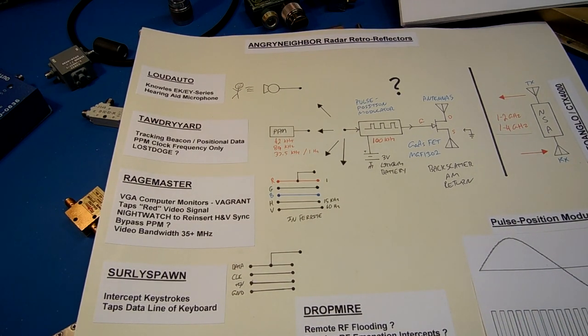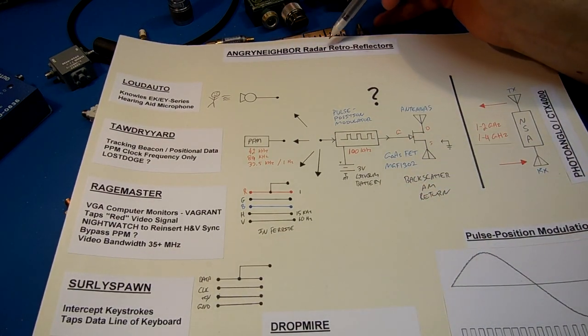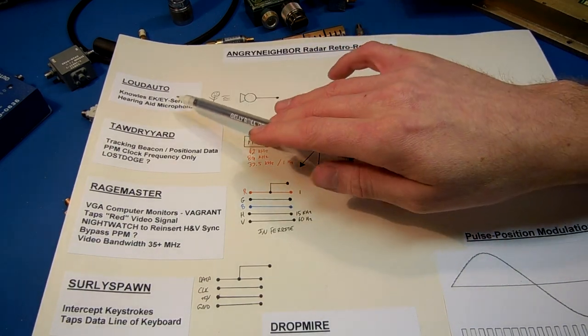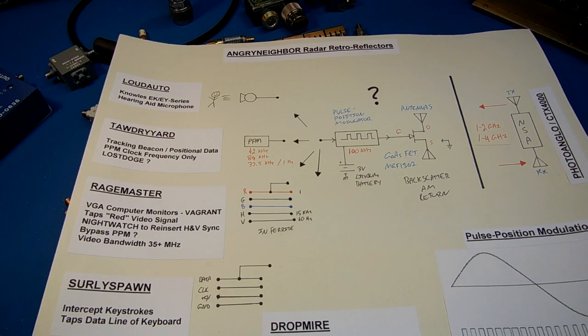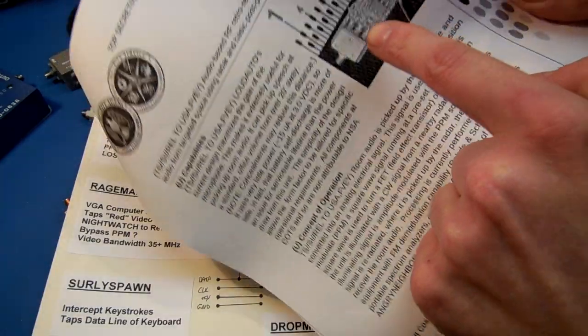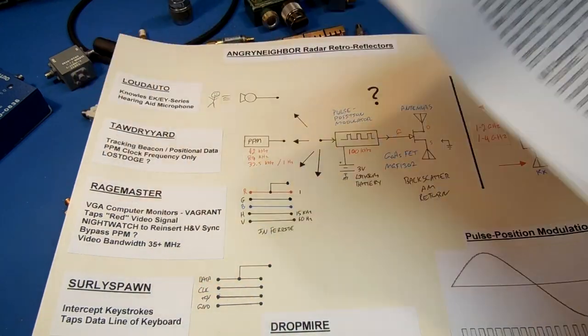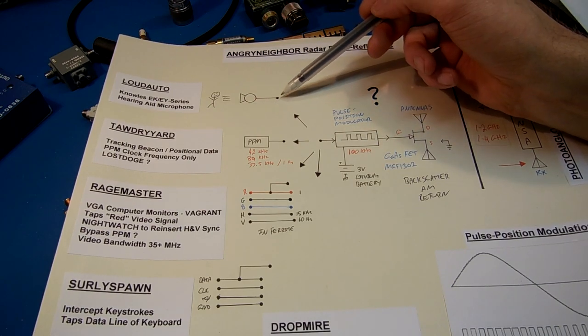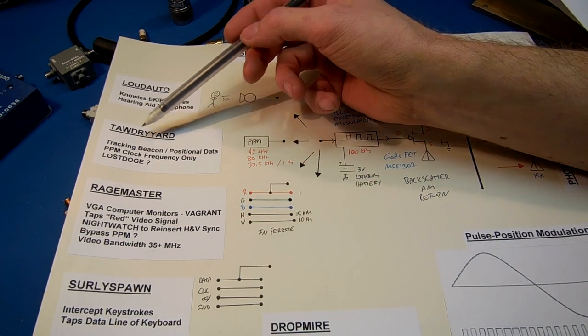Here's how the bugs work. The retroreflectors are referred to as the Angry Neighbor family of Radar Retroreflectors. The Loud Auto has a Knowles EK or EY series hearing aid microphone. That's a device in a very, very distinct shape. That's a Knowles microphone. Anytime you see that out in the field, somebody's bugs after you. It has an internal amplifier, just raw room audio.